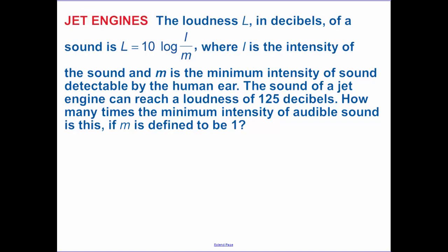An application of this, and you will need your calculator. The loudness L in decibels of a sound is given by this equation, where I is the intensity of the sound and M is the minimum intensity. The sound of a jet plane can reach a loudness of 125 decibels. That's L of 125 decibels. How many times the minimum intensity of audible sound is that if M is defined to be 1?